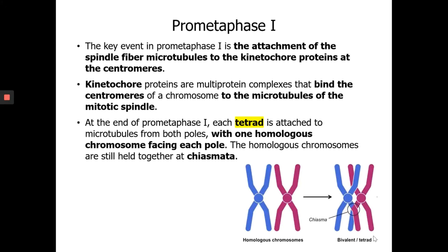Between Prophase and Metaphase, there is a transition stage called Prometaphase. This happens right before Metaphase. Because everything happens in Meiosis I, we're going to assign number 1 to all these different stages. Then during Meiosis II, everything will happen at number 2.